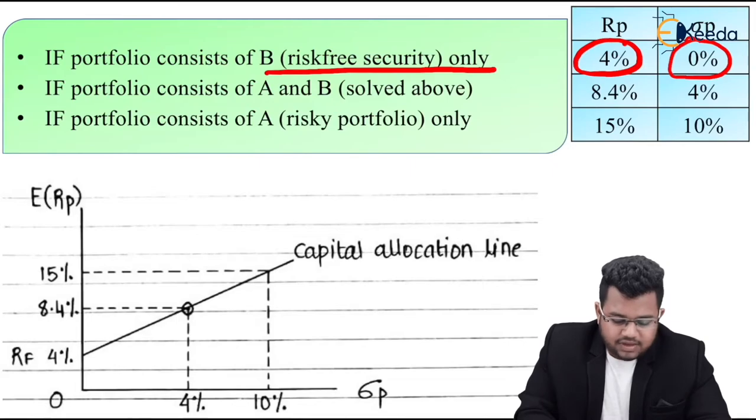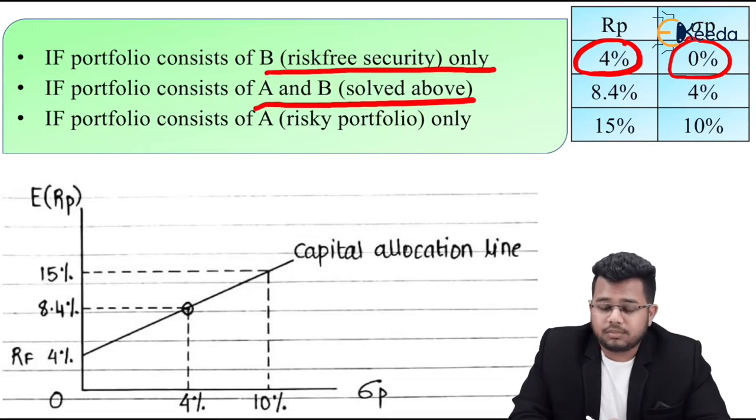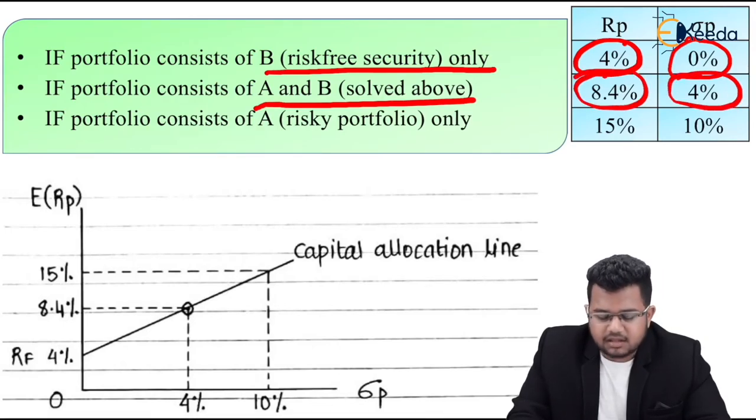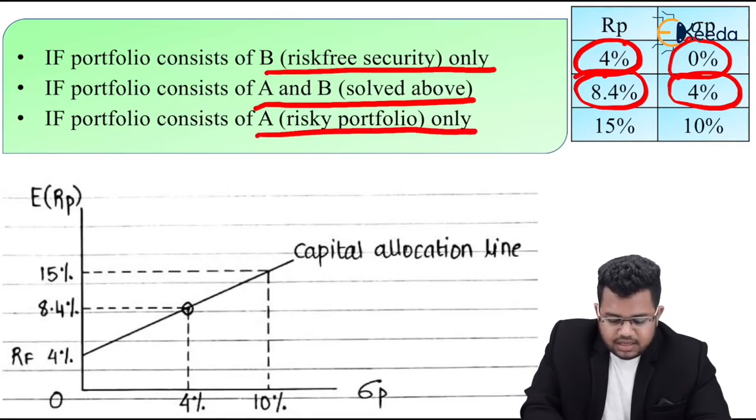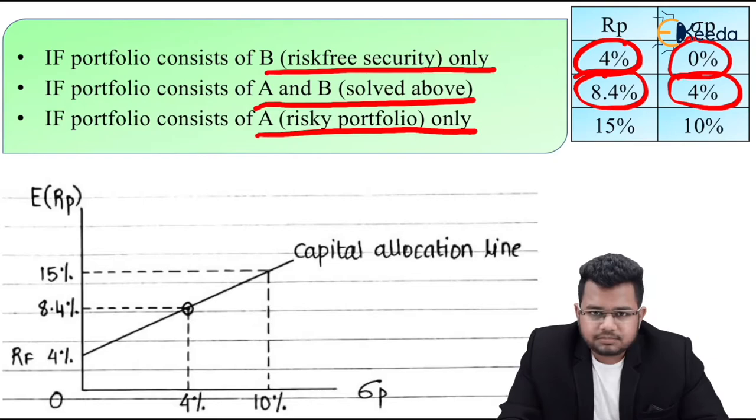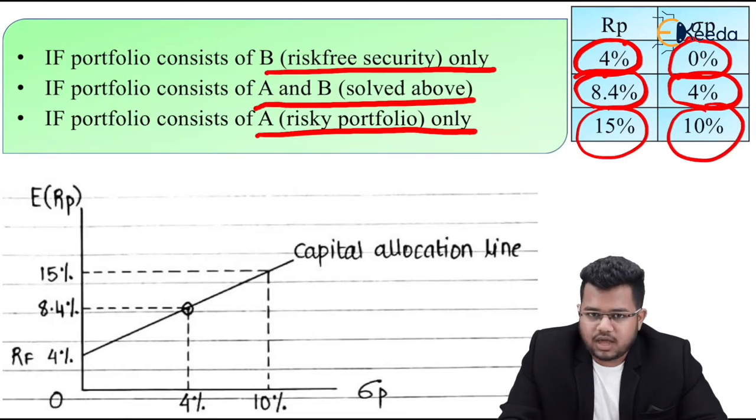Now as you can see in front of you, if portfolio consists of B only - B was risk free security - then RP will be 4%. Look, if your portfolio has only B, then B's return becomes your portfolio's return. So RB was 4%, and sigma P of course 0%, it's risk free. If portfolio consists of A and B, which you just solved, if A and B both are in your portfolio, then RP was 8.4, sigma P was 4%. And if portfolio consists of A only - A was risky portfolio only - if only A is in your entire portfolio, then A's return was 15 and risk was 10, which becomes your portfolio's return and risk.